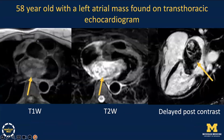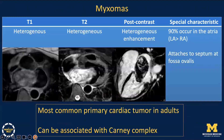This is a 58-year-old with a left atrial mass found on echo. The diagnosis in this case is a myxoma, which is the most common primary cardiac tumor of the heart. The key to diagnosis is the location, with 90% of myxomas occurring in the atria, most commonly the left atrium at the fossa ovalis, as we see in this case. T1 and T2 signal are variable, and enhancement is also often heterogeneous.